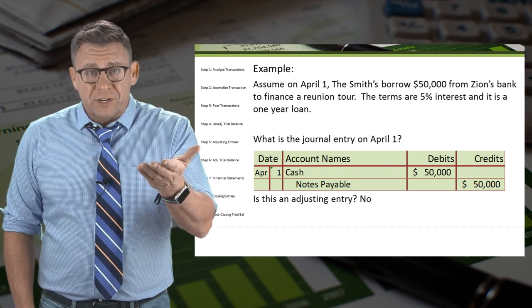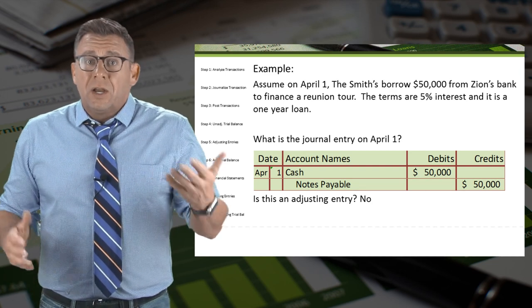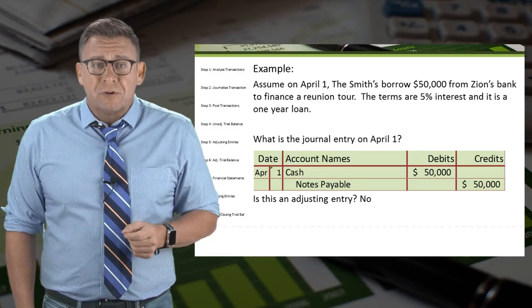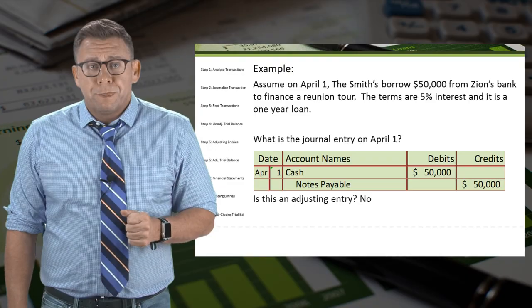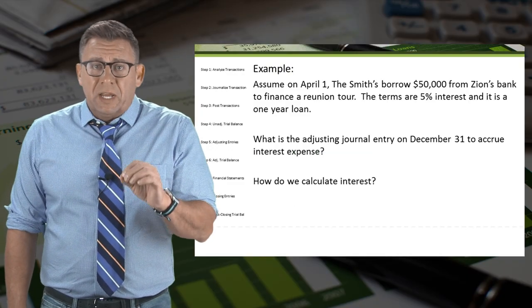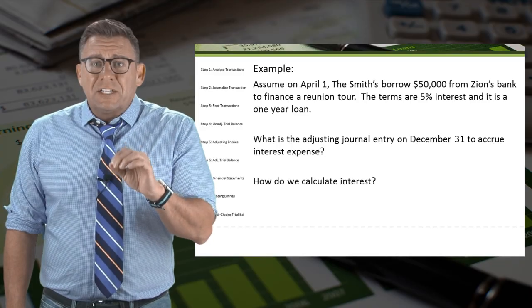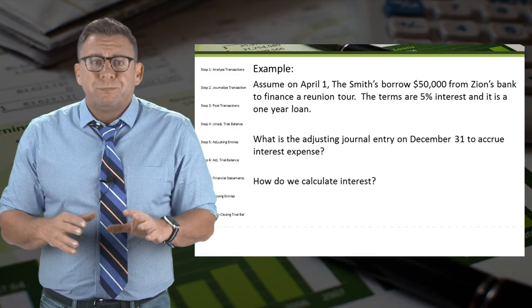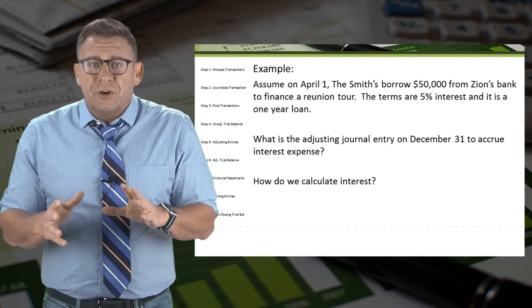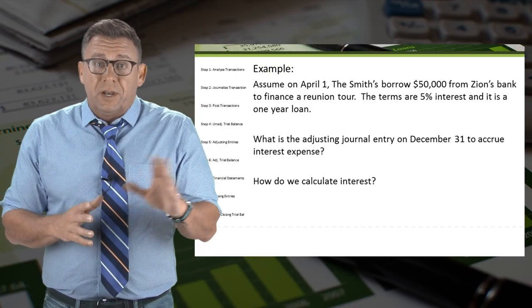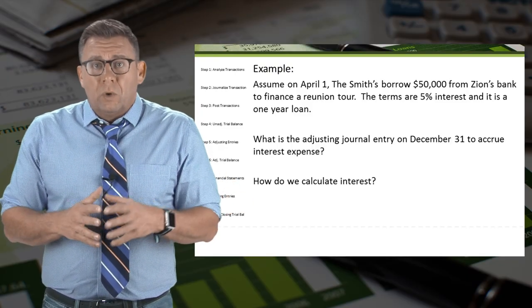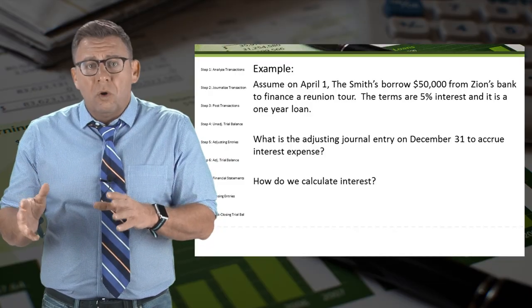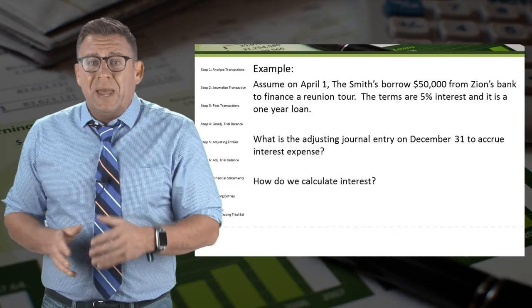Is this an adjusting entry? No, because there's an underlying event that happens on April 1. The adjusting entry needs to be recorded at the end of the year — let's assume December 31. In addition to the note payable, which has already been recorded, what do the Smiths owe but have not yet paid?